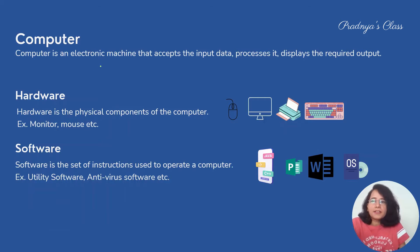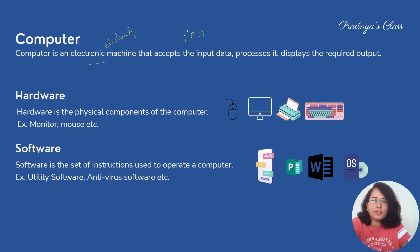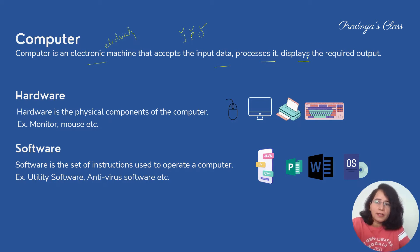Let's understand what is a computer. Computer is an electronic machine and it runs on electricity. It follows the principle of IPO, that is input, process, and output. It takes the input, processes it, and displays the required output.